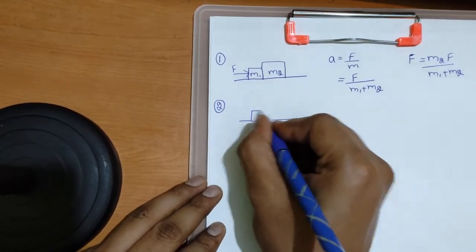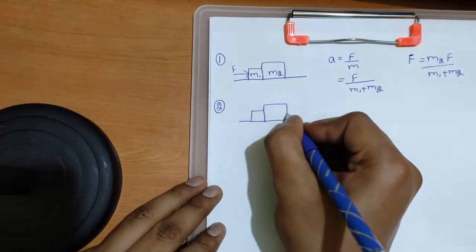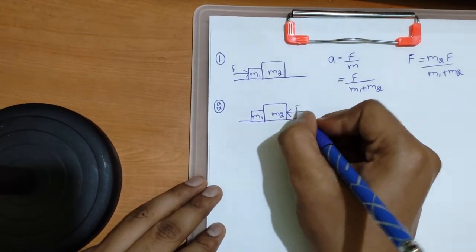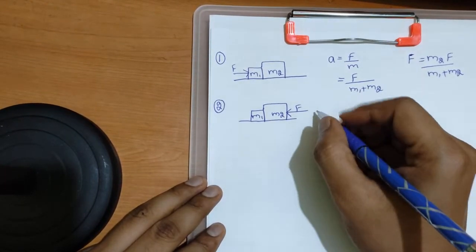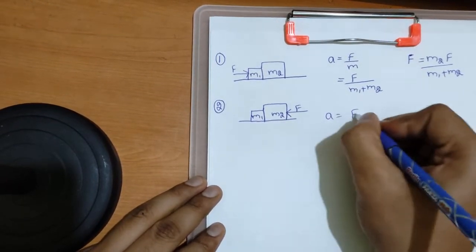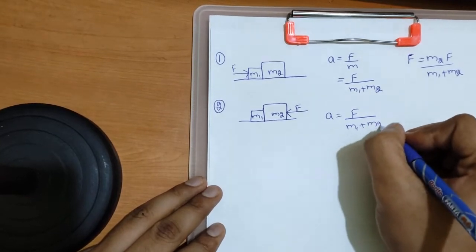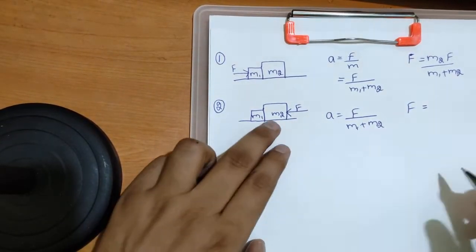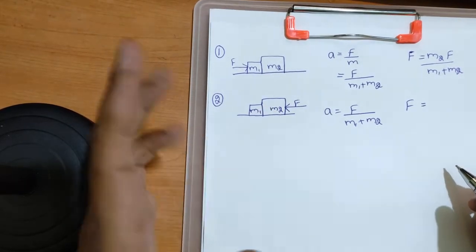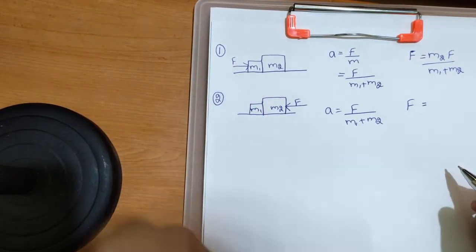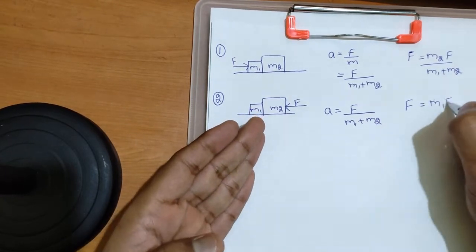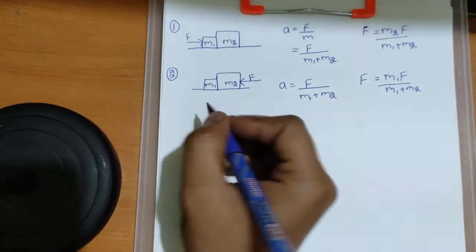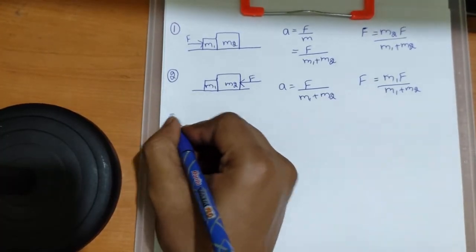Now I'll just reverse this situation to make you understand better. With m1 and m2, suppose I apply force on m2 — acceleration will be the same, F by sum of the masses. Now the contact force: as I told, on whichever block the force is applied, forget it. Write the remaining block mass divided by the sum of the masses.